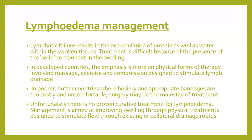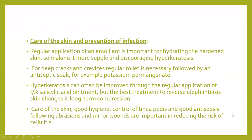Care of skin and prevention of infection: the regular application of emollients is important for hydrating the skin, making it supple, and discouraging hyperkeratosis. For deep cracks and crevices, regular toilet is necessary followed by antiseptic soap — for example, potassium permanganate — then emollient application. Hyperkeratosis often improves with application of keratolytic agents like 5% salicylic acid. The best treatment to reverse elephantiasis is long-term compression.